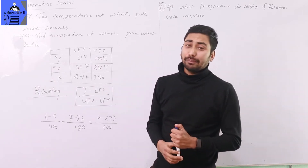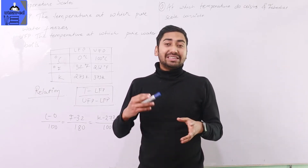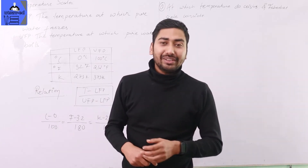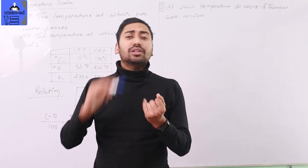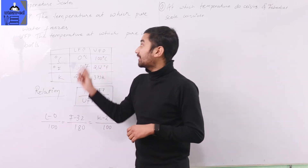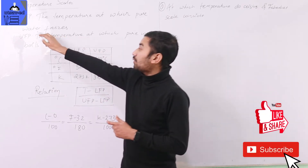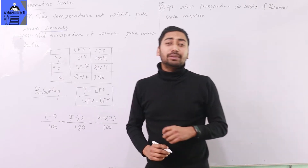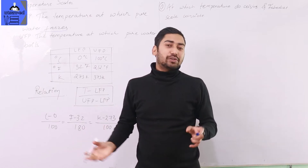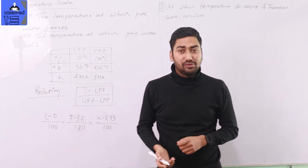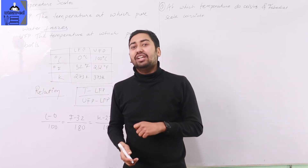These three relations are very important for calibration. Some scales define a lower fixed point and an upper fixed point. The lower fixed point is the temperature at which pure water freezes. For Celsius, the lower fixed point is 0 degrees — water freezes at 0 degrees Celsius.